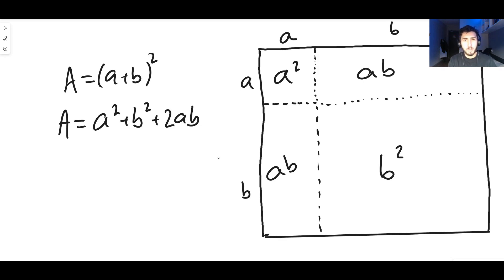Both of these represent the same thing—they both represent the area of the square, which means we can say that (a+b)² must be equal to a² + b² + 2ab, independently of the values of a and b. And that is actually a way to prove it, so you can use geometry in order to prove this very famous identity.